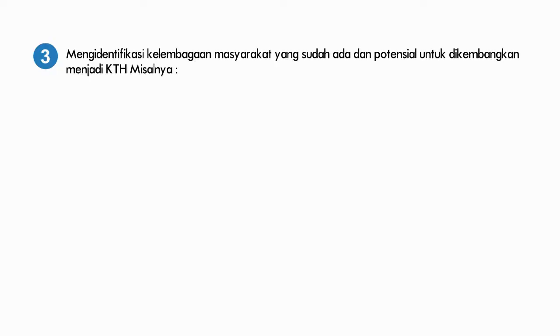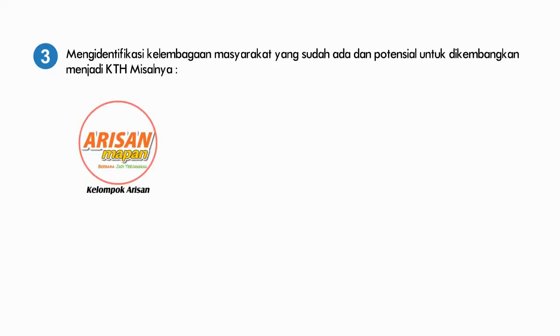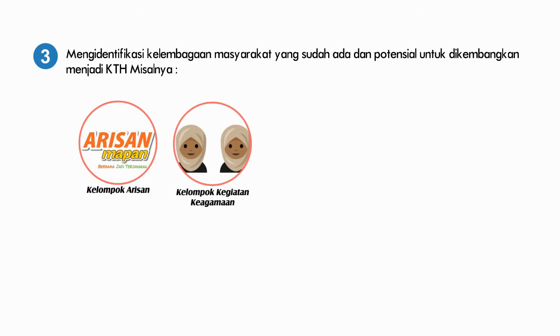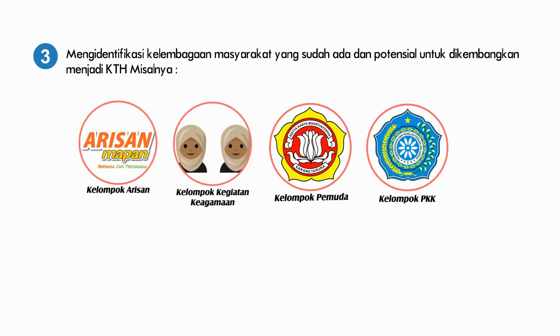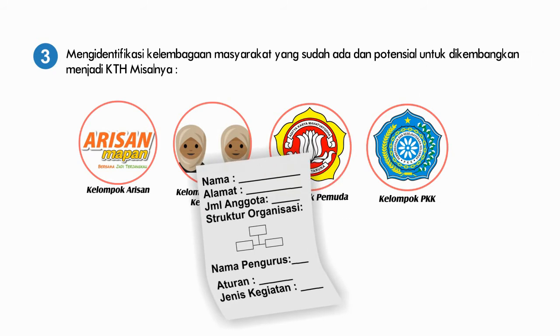3. Mengidentifikasi kelembagaan masyarakat yang sudah ada dan potensi untuk dikembangkan menjadi KTH, misalnya kelompok arisan, kelompok kegiatan keagamaan, kelompok pemuda, PKK dan lain-lain, meliputi nama, alamat, jumlah anggota, struktur organisasi, nama pengurus, aturan organisasi dan jenis kegiatan.